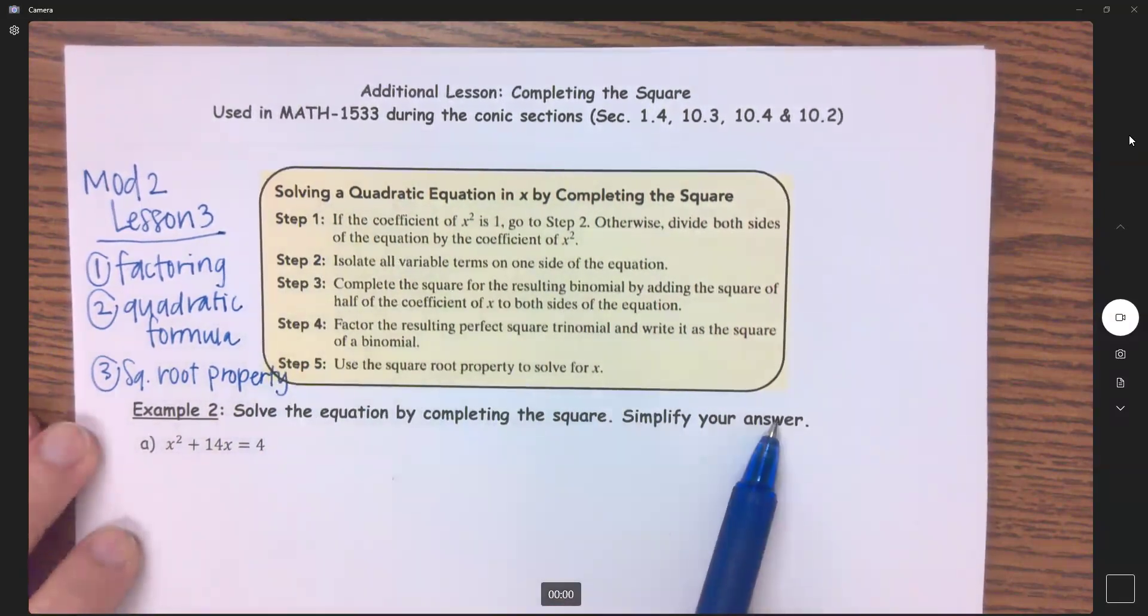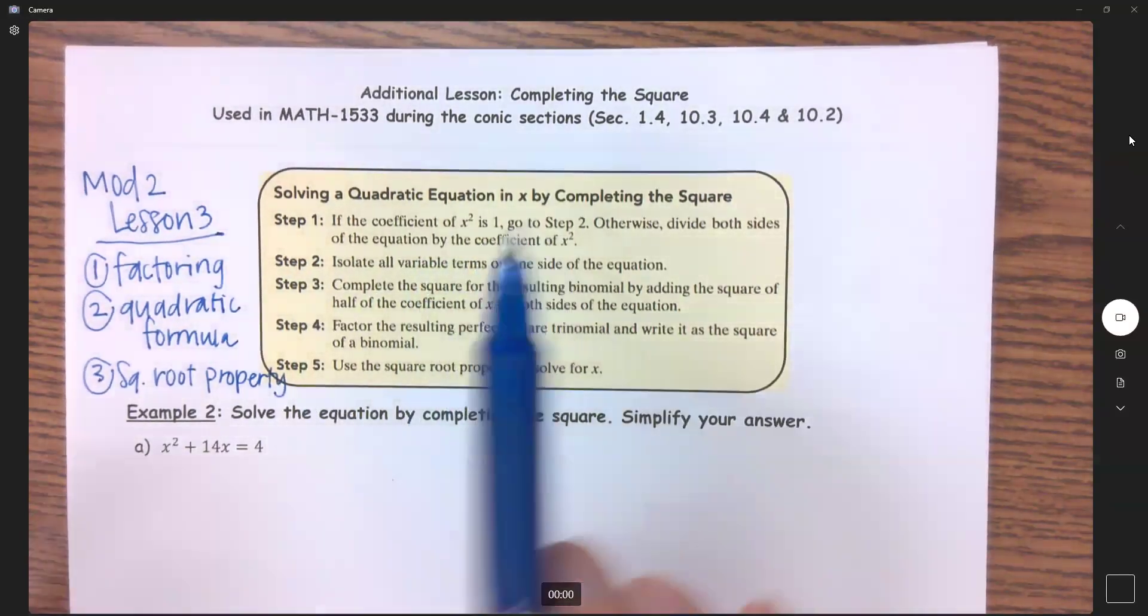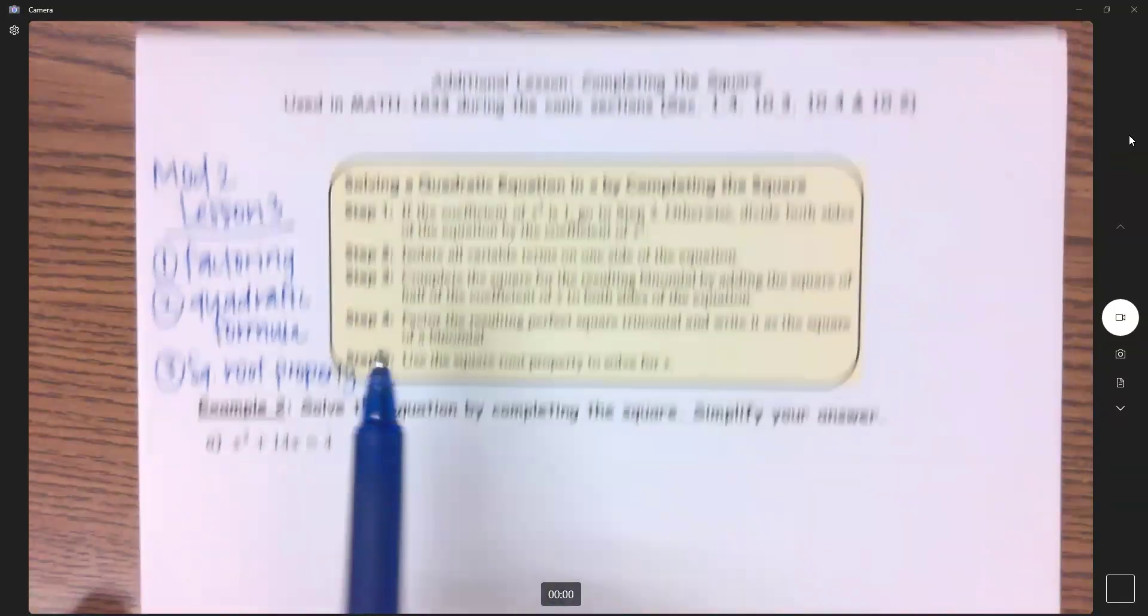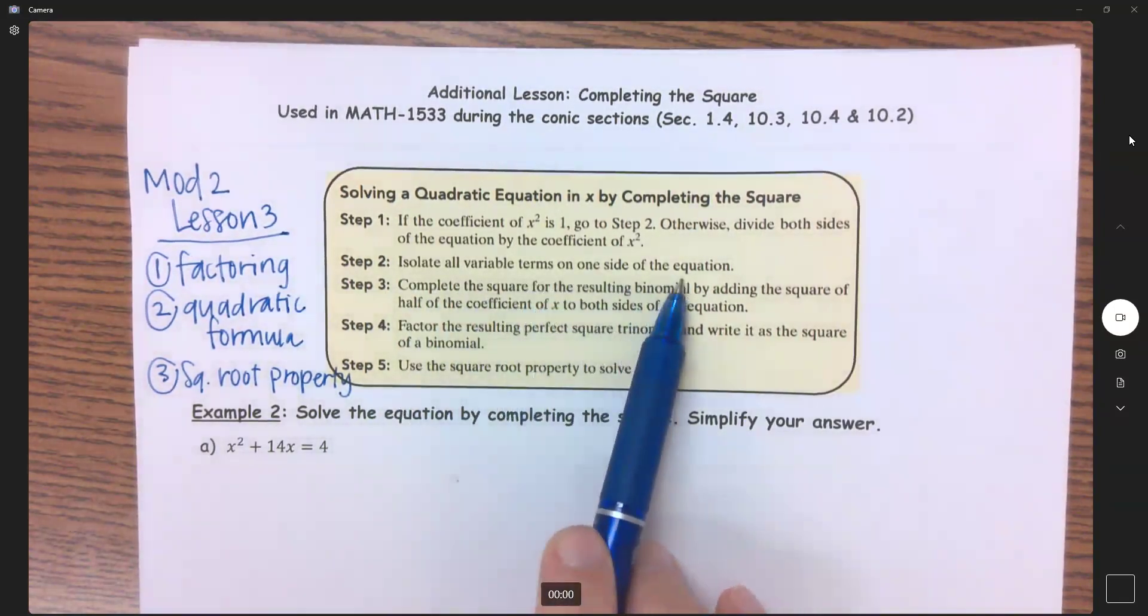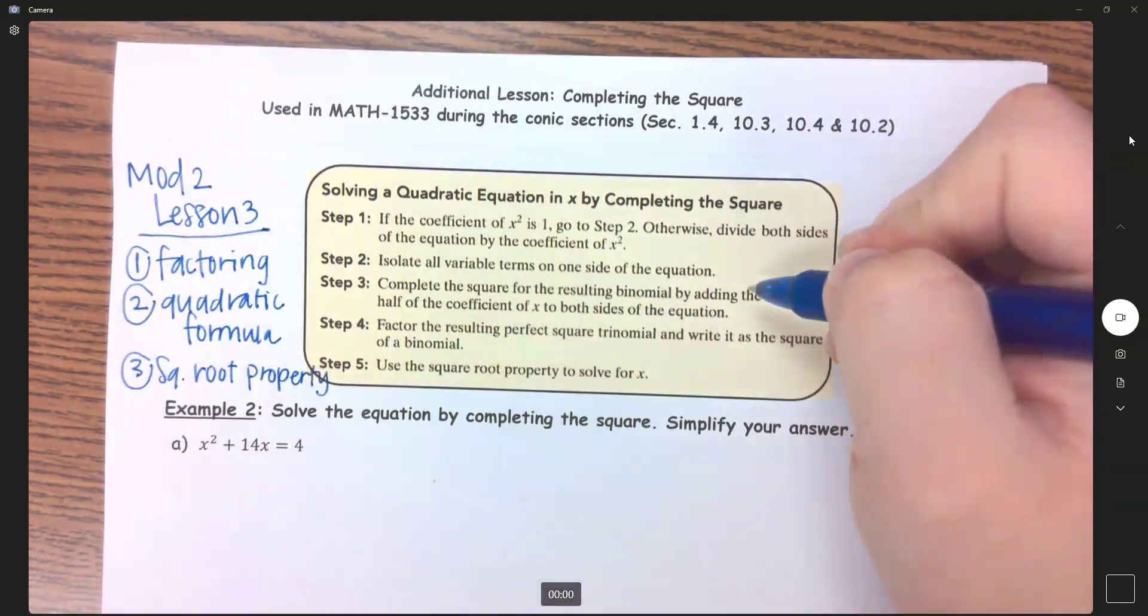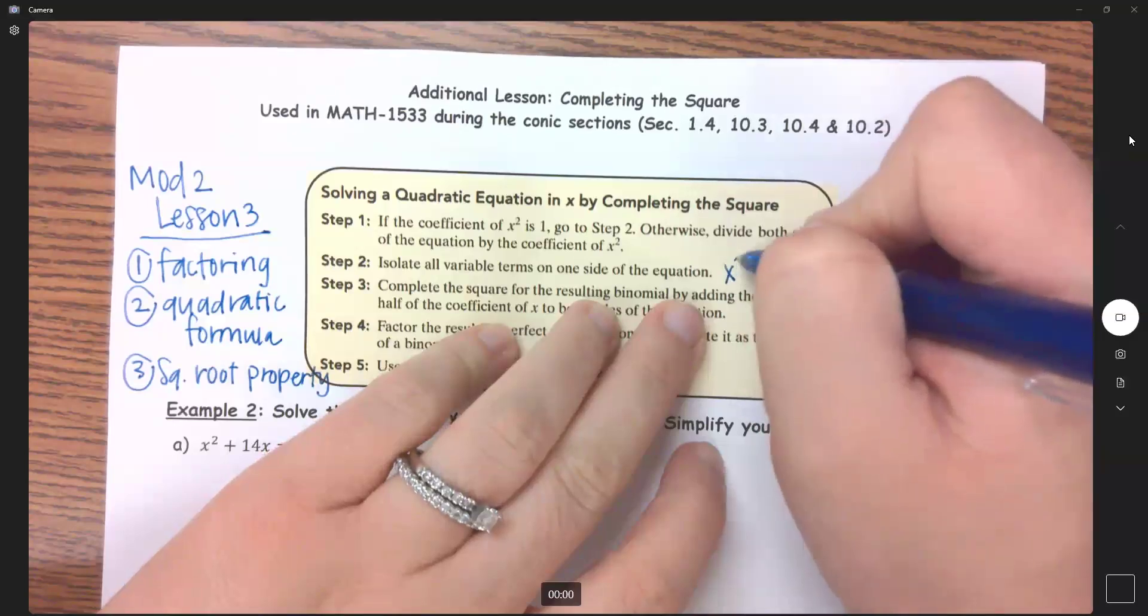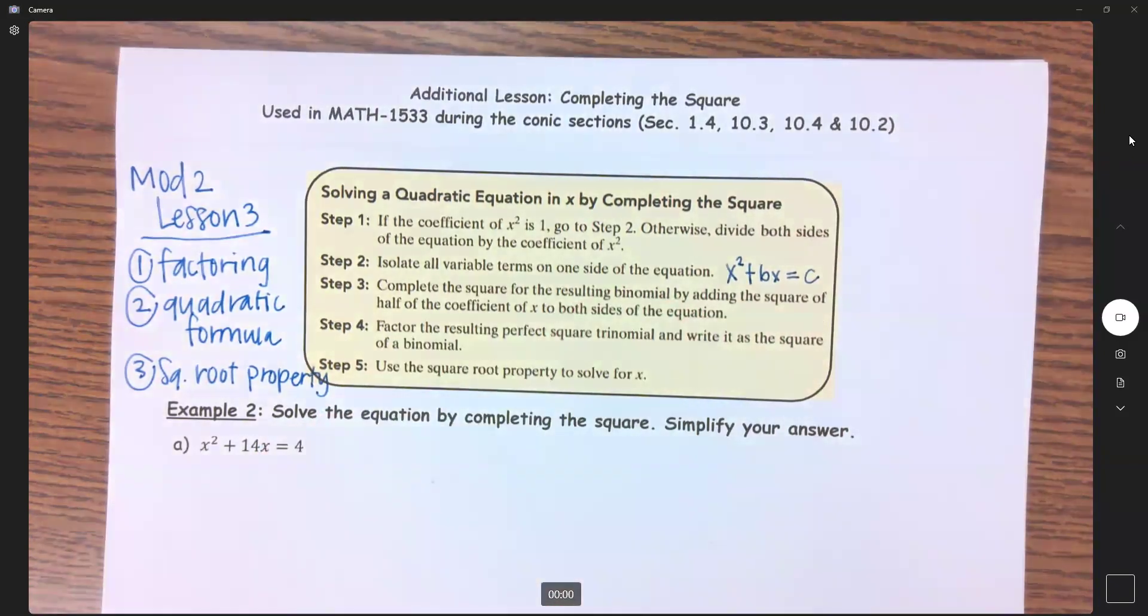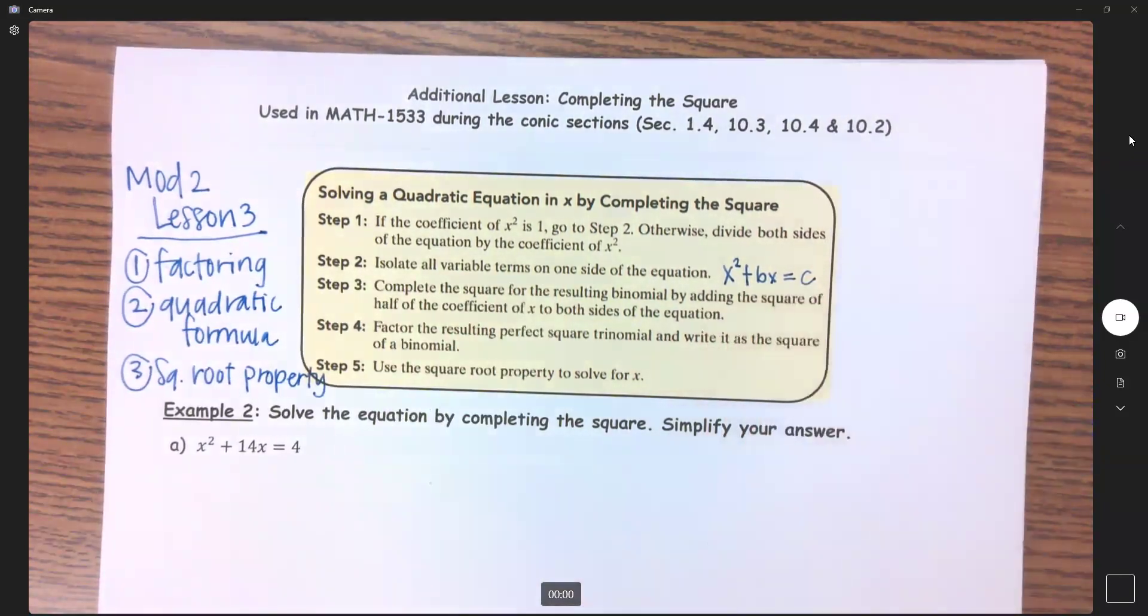So we have all of these steps here. Step 1 says if the coefficient of x² is 1, go to step 2. And for example 2, all of our coefficients here will be 1, so we're starting with step 2. It says isolate all variable terms on one side of the equation. So this is a little bit different than we've done before. If I have my ax² + bx + c = 0, I'm going to put 1 for my a. So we want to get this in the form of x² + bx = c. I want my variable terms on one side of the equation, my constant on the other side.